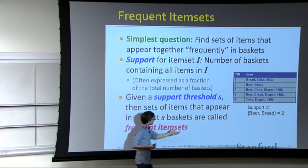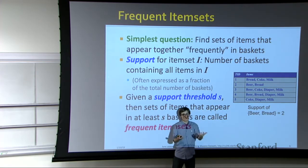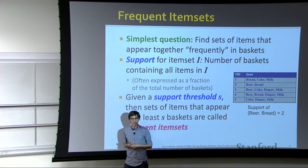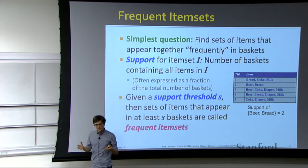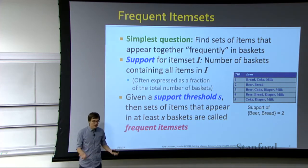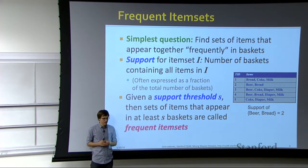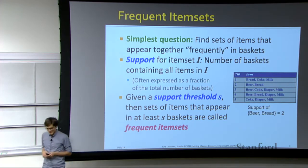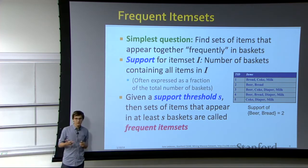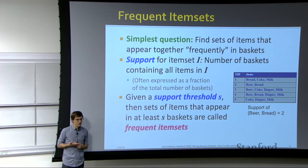Right now I have one parameter S, specified by the user. They say find me all itemsets that appear in more than ten baskets — those are called frequent itemsets. So we now know what an itemset is, what support is, and what it means to be a frequent itemset.